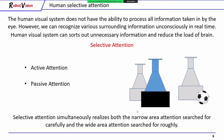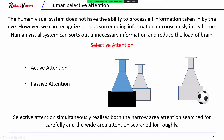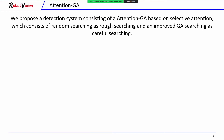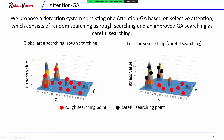Both the narrow area attention, which searches carefully, and the wide area attention, which searches roughly, are combined. We propose a detector system consisting of the Attention GA based on selective attention, which consists of random searching as a rough search and an improved GA searching as a careful searching.